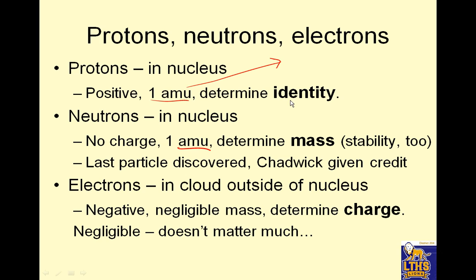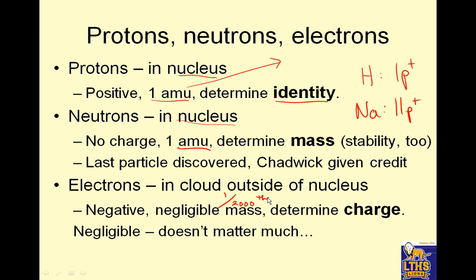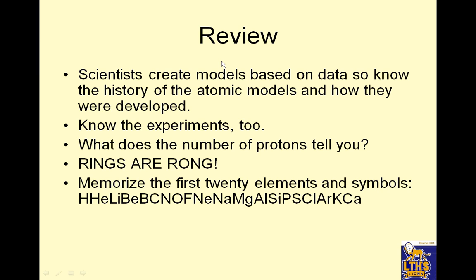Protons help determine the identity of an element — if you have hydrogen, you have one proton; if you have sodium, there are 11 protons. Neutrons are also in the nucleus, also have a mass of one AMU relative to each other, and they help determine the mass and stability of atoms. Electrons are in probability clouds outside the nucleus, have negative charge, and negligible mass — they're one two-thousandth of the mass of protons and neutrons. Electrons help determine the charge of an atom: if neutral, it has equal protons and electrons; if a positive ion, electrons have gone away; if a negative ion, electrons have been gained.